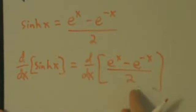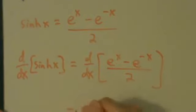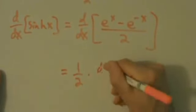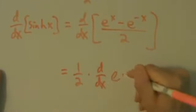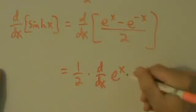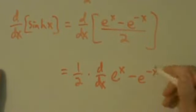So this all over 2 here, this just means we're multiplying by a half, or we're dividing by 2. So what we can do is just pull the one-half out of the derivative, and we're left with this. 1 half times d dx of e to the x minus e to the negative x.